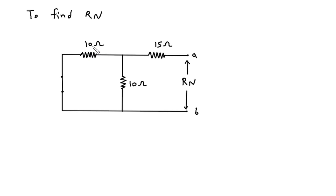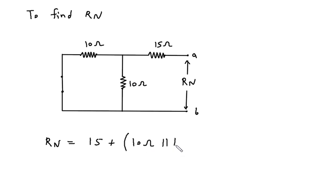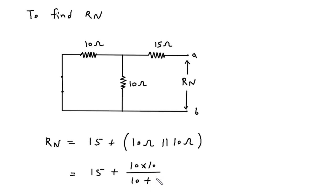Here we can see this 10 ohm and 10 ohm are connected in parallel and it is connected in series with this 15 ohm. Therefore, Rn is equal to 15 plus 10 ohm parallel with 10 ohm. This will be 15 plus 10 into 10 divided by 10 plus 10.